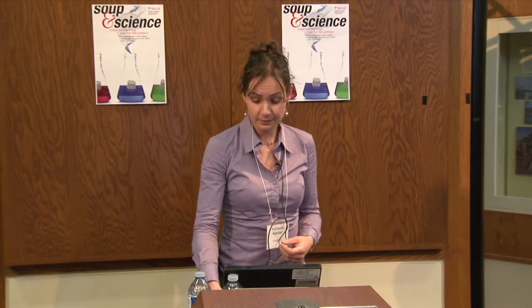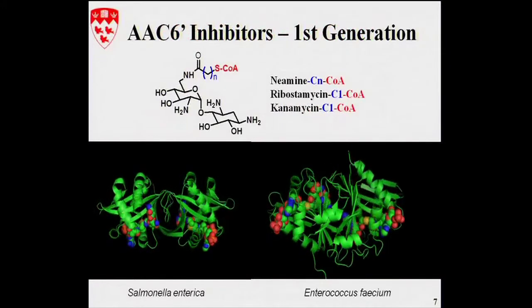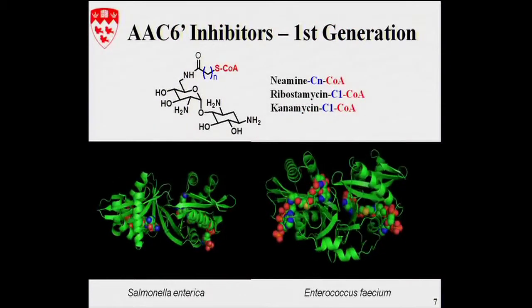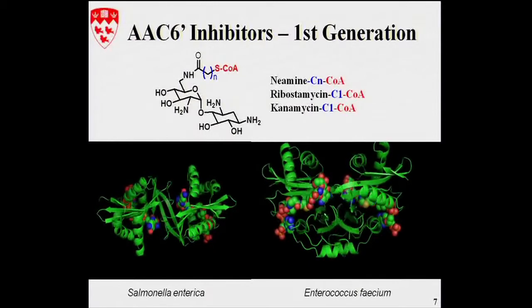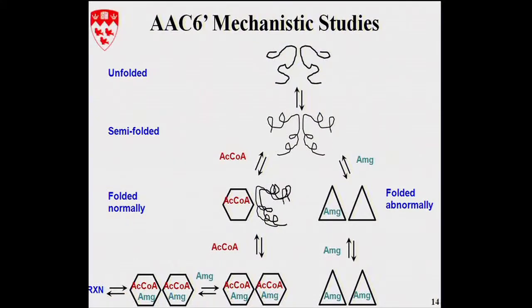What my group aims to do is develop inhibitors of these enzymes. We came up with a first generation of inhibitors — what we call bisubstrates. They were very potent and very useful for obtaining crystal structures of enzymes from different bacteria and for mechanistic studies. They showed us that some of these enzymes can be very complex, using different folds and behaving differently with different substrates. However, these bisubstrates do not penetrate cells, so they were not useful to treat resistance.